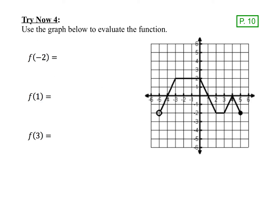Here's a quick try-now problem for you to try on your own. Please pause the video and give this problem a try. Here are your answers: for f(-2), find negative 2 on the x-axis, look at the point on the graph, and the y value is 2. For f(1), that's right on the x-axis so its y value is 0. For f(3), locate the point on the graph and the y value is negative 2.